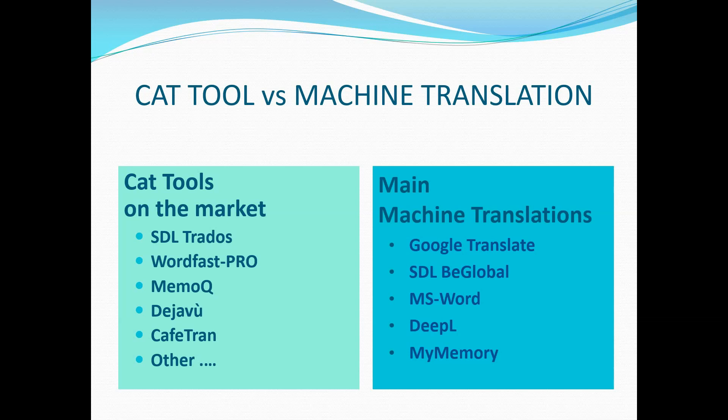Another factor that is important in order to have a good outcome from machine translation is the language combination. So if we have two very popular language combinations — for example English into French, or English into Italian, or English into German — then we will have a much better output than with language combinations such as Norwegian into Swahili, or Hindi into Swedish. So the language combination is important in order to have a good output.